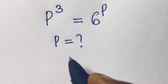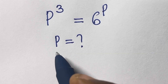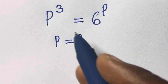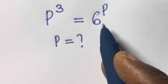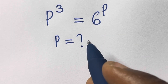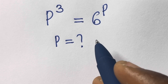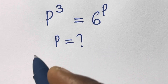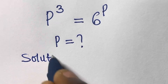Hi guys, welcome to mathematics. In this video we want to solve for p in p raised to power 3 equals 6 raised to power p. This may look simple, but 99% of students fail this. Let's solve this together and see the solution.